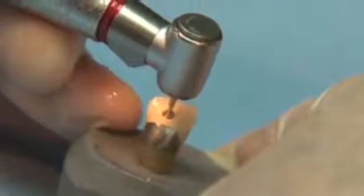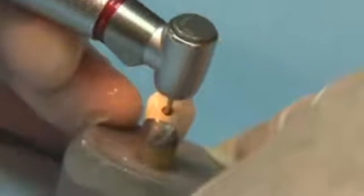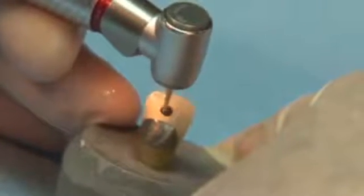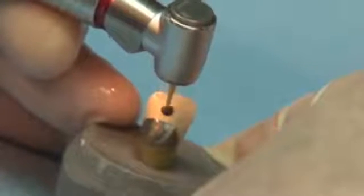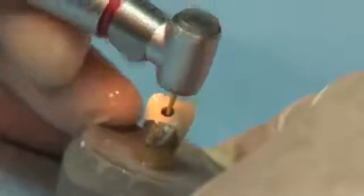SS White offers a selection of surgical length Great White Burrs. These burrs are available in round numbers 2, 4, and 6, as well as the ever popular number 557. The added length improves visibility and allows for deeper access.